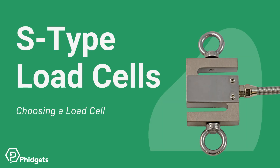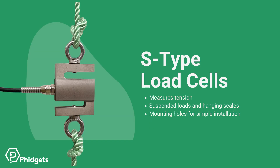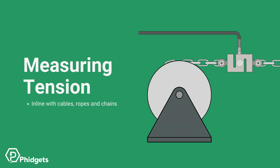The next type of load cell is the S-type load cell, easily identified due to their S shape. These load cells are primarily used to measure tension, which makes them ideal for applications with suspended loads and hanging scales. Installation is easy due to the mounting holes on the top and bottom — eye bolts or rod end bearings can be easily attached and provide a connection point to the rest of the system. Some applications include monitoring tension in cables, ropes, and chains, such as on a winch or a crane.